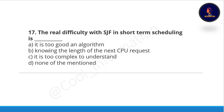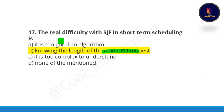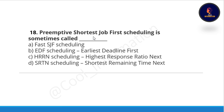Question seventeen: the real difficulty with shortest job first in short-term scheduling is what? Option A: it is too good an algorithm, option B: knowing the length of the next CPU request, option C: it is too complex to understand, option D: none. The correct option is option B: knowing the length of the next CPU request.